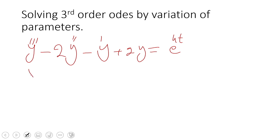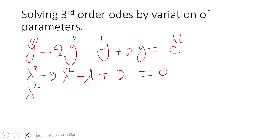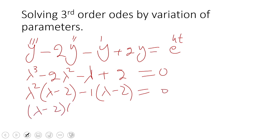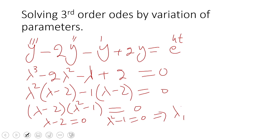The characteristic equation takes the form lambda^3 minus 2lambda^2 minus lambda plus 2 equals 0, which factors as (lambda minus 2)(lambda^2 minus 1) = 0. This implies lambda_1 = 2, lambda_2 = 1, and lambda_3 = -1.